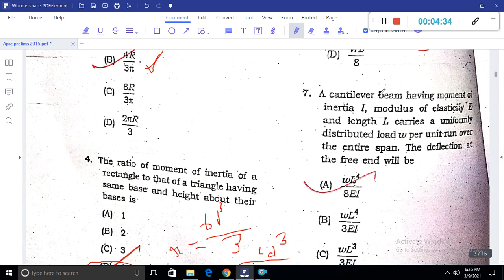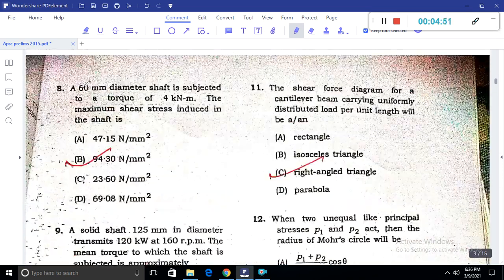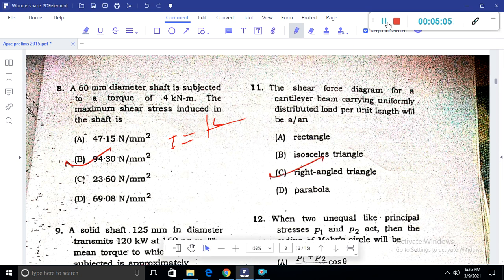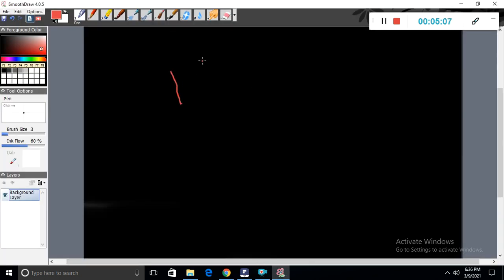Question 7: A cantilever beam having moment of inertia I, modulus of elasticity E, and length L carries a uniformly distributed load W per unit run. The deflection at the free end will be WL⁴/8EI. Question 8: For a 60 mm diameter shaft subjected to a torque of 4 kilonewton-meter, the maximum shear stress formula is 16T/(πd³).